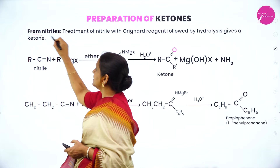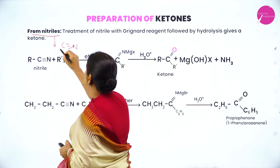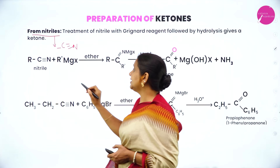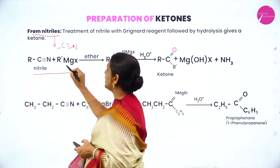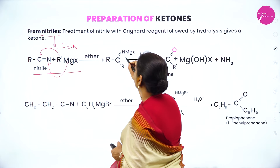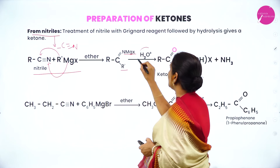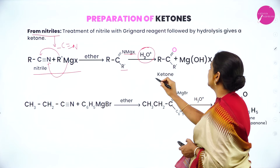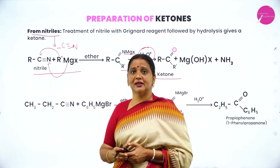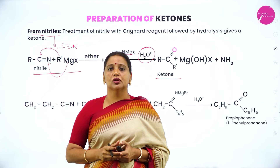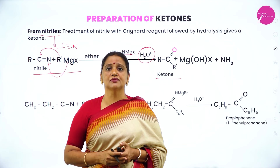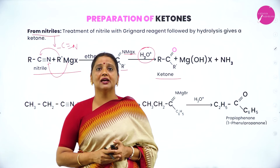The second method is from nitriles. Nitriles are compounds containing the functional group C triple bond N. When nitriles are treated with Grignard reagent, MgX goes to nitrogen and R dash goes to carbon, so the triple bond becomes a double bond, giving an intermediate which on acid hydrolysis gives rise to ketone.